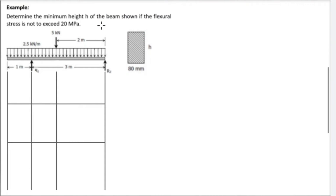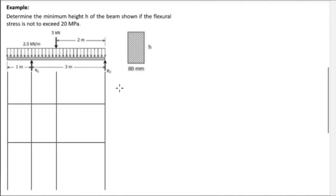Example: Determine the minimum height H of the beam shown if the flexural stress is not to exceed 20 MPa. The cross-sectional width of the beam is 80 mm, and we need to find the height H. The beam has a uniform load of 2.5 kN per meter and a concentrated load of 5 kN, and it is a simply supported beam with reactions R1 and R2. First, we need to find the values for R1 and R2.